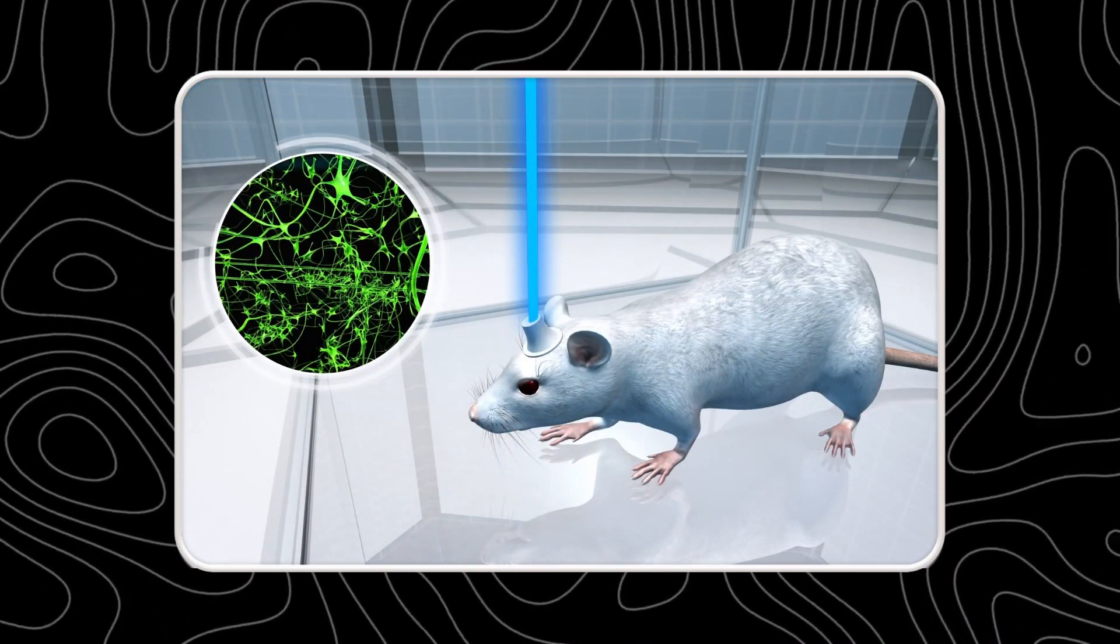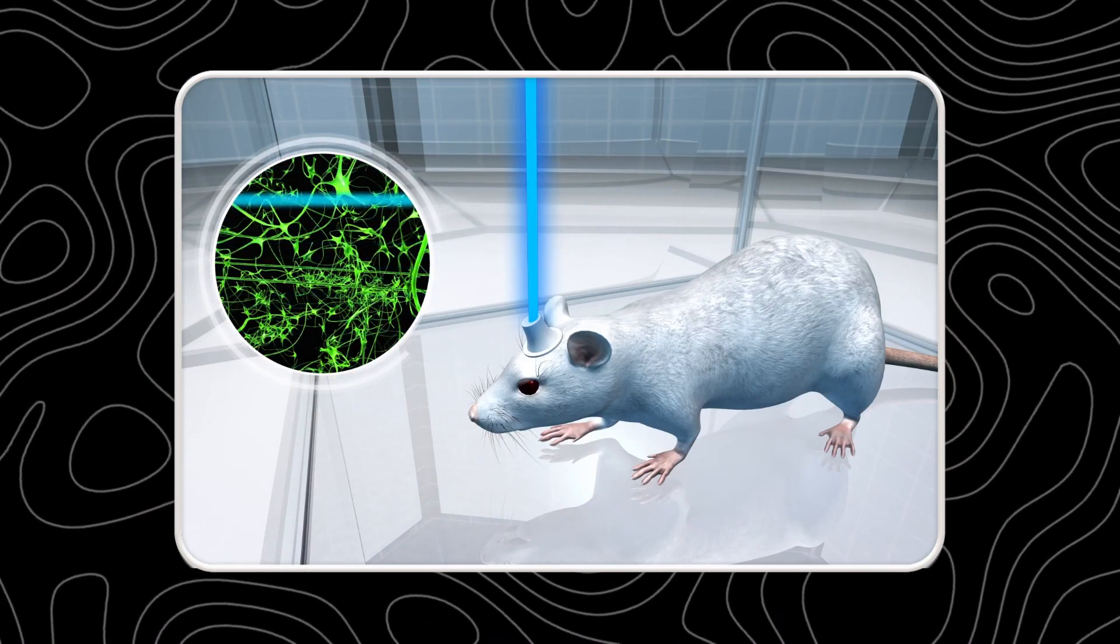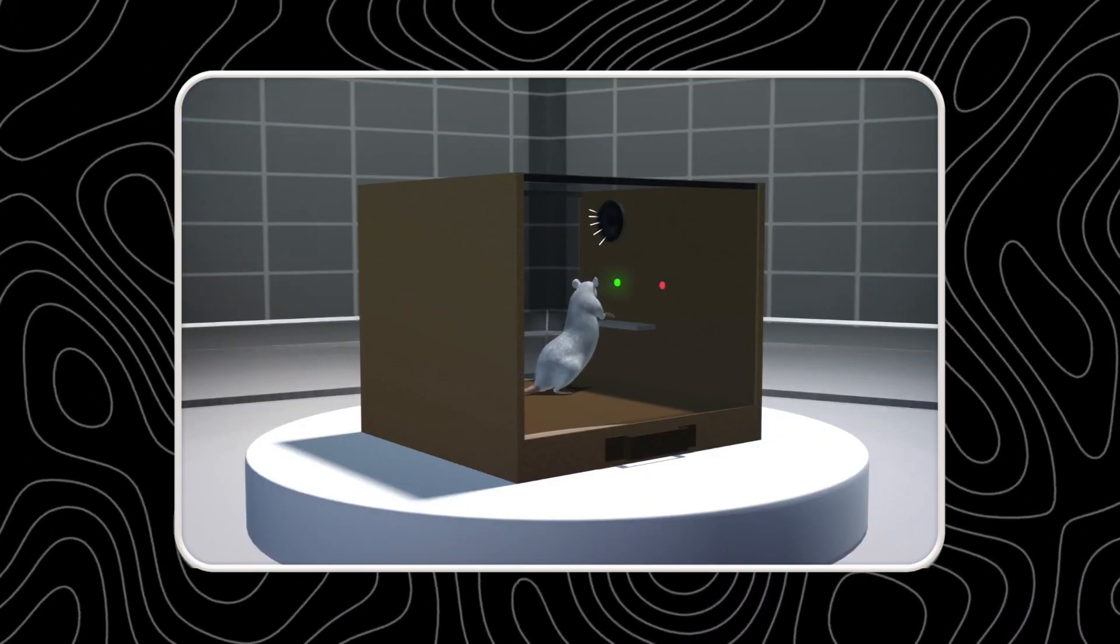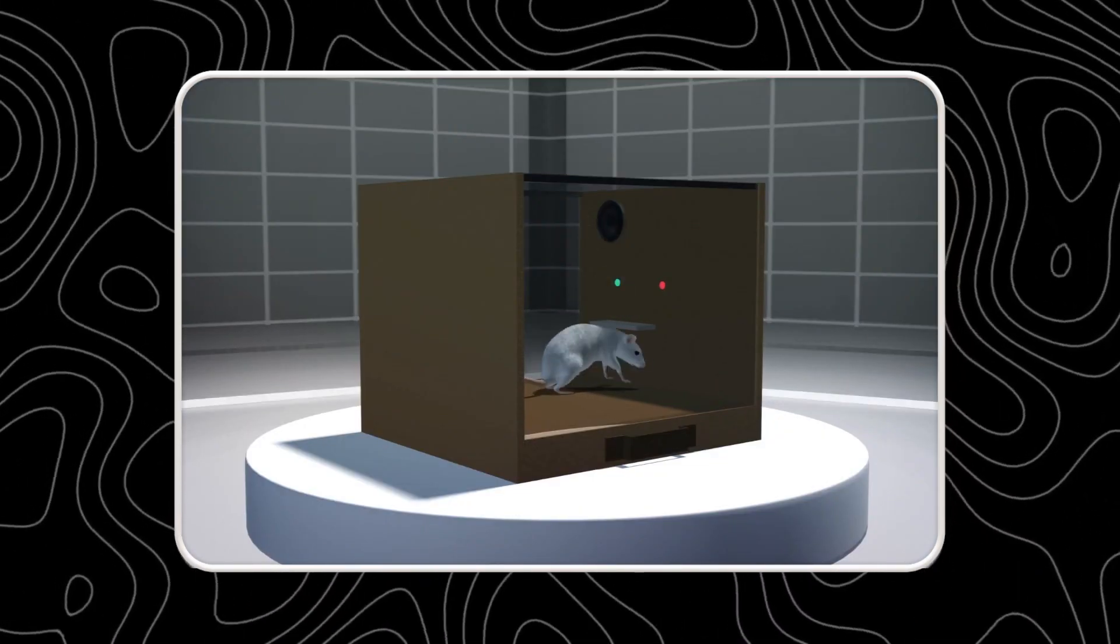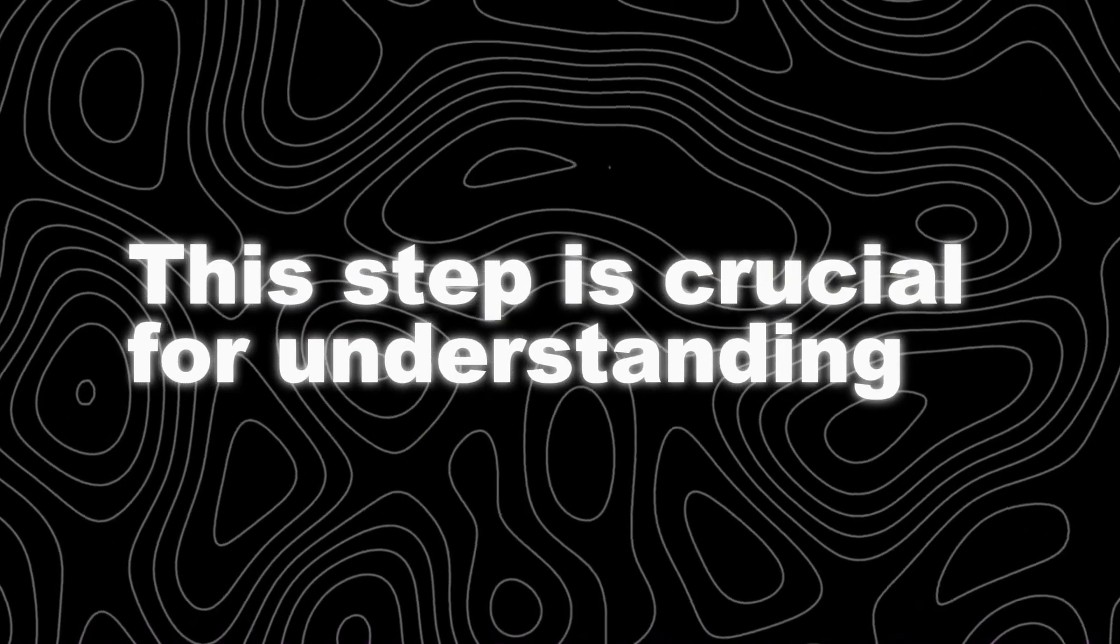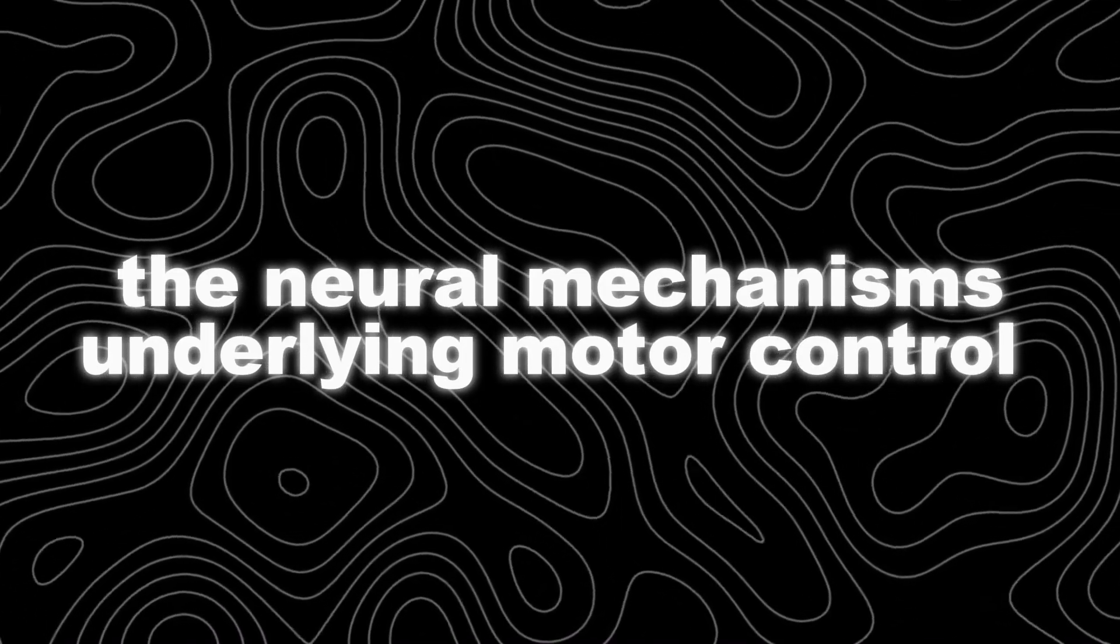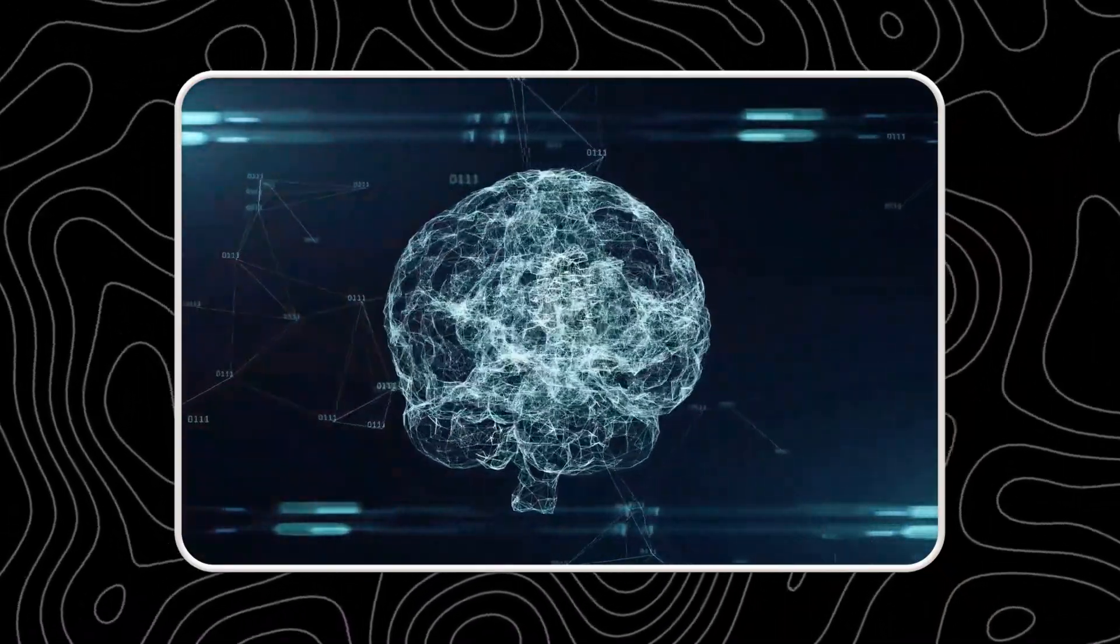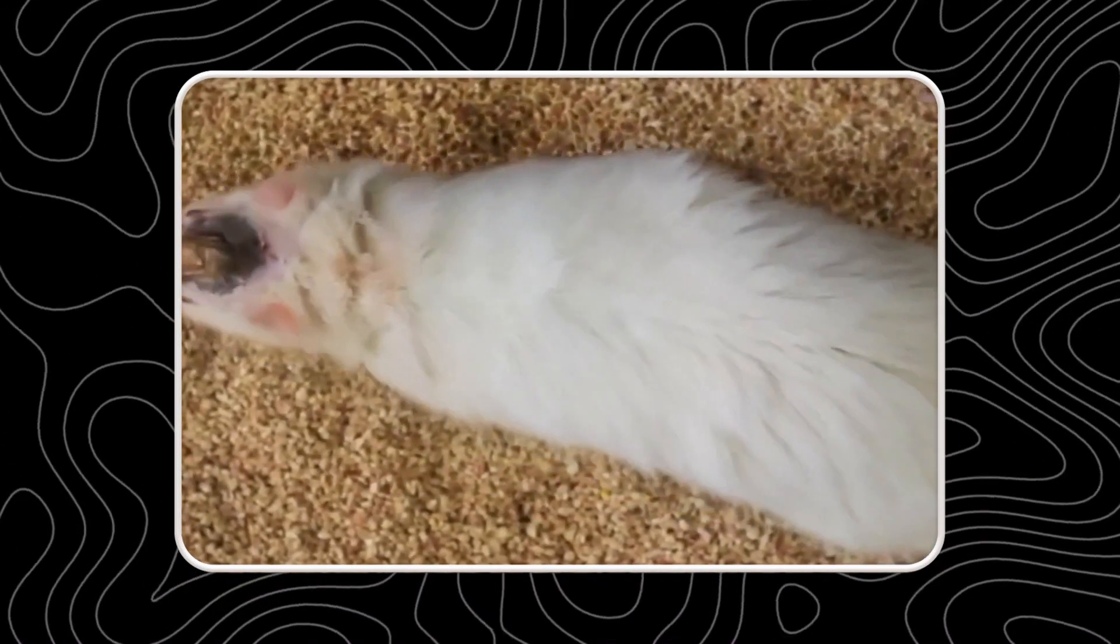With this virtual rat brain successfully controlling the biomechanical model, researchers could delve deeper into the workings of the neural network. They could gain valuable insights into how real rat brains might control movement. The researchers discovered that the virtual brain's neural activity patterns were very similar to those recorded from real rats' brains while they were moving. This similarity suggests that the AI had figured out ways to control movement just like real brains do.